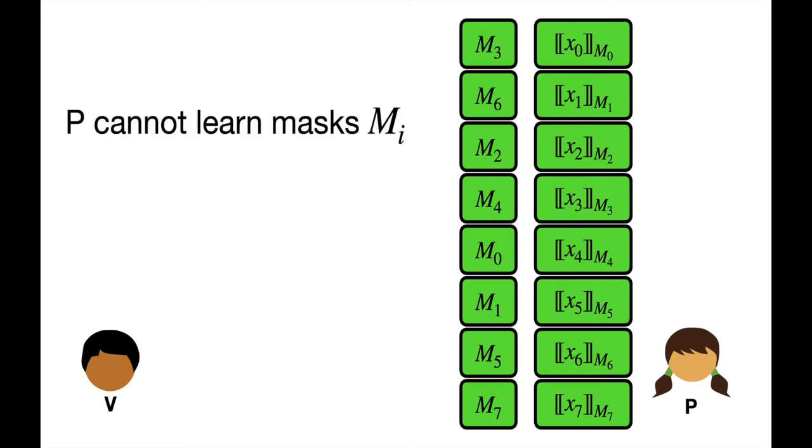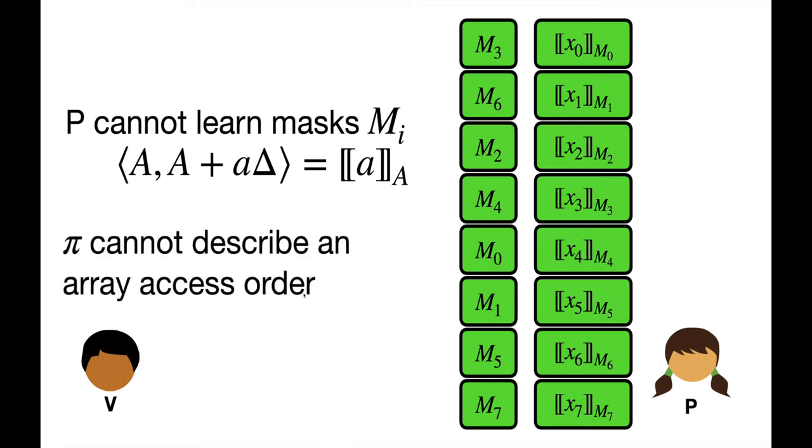As I said, this intuition leaves on the table several important problems. First, my description implied that P will learn each of these RAM masks. This is clearly insecure, since my entire argument for the authenticity of authenticated shares was based on the secret one-time pad nature of the masks. Second, I assume that the RAM access order can be described as a permutation. But this is clearly insufficient to describe arbitrary RAM access orders. In real RAMs, we assume that we can access the same slot repeatedly. A permutation cannot support this capability. The rest of this talk will be about resolving these two problems.